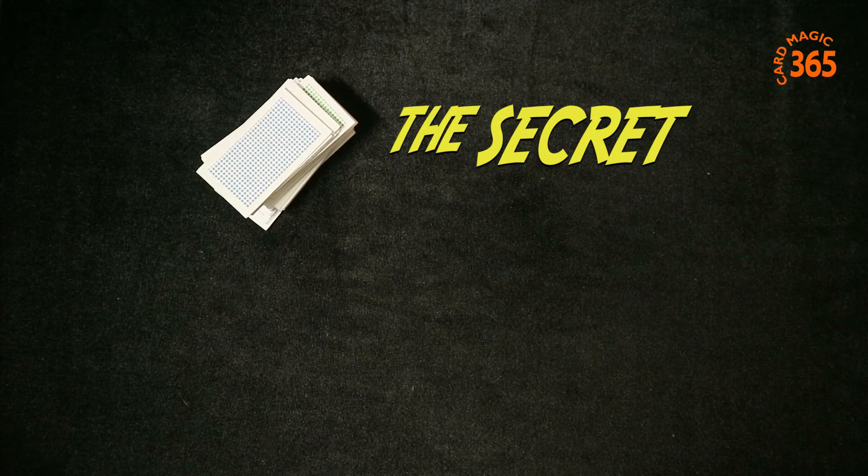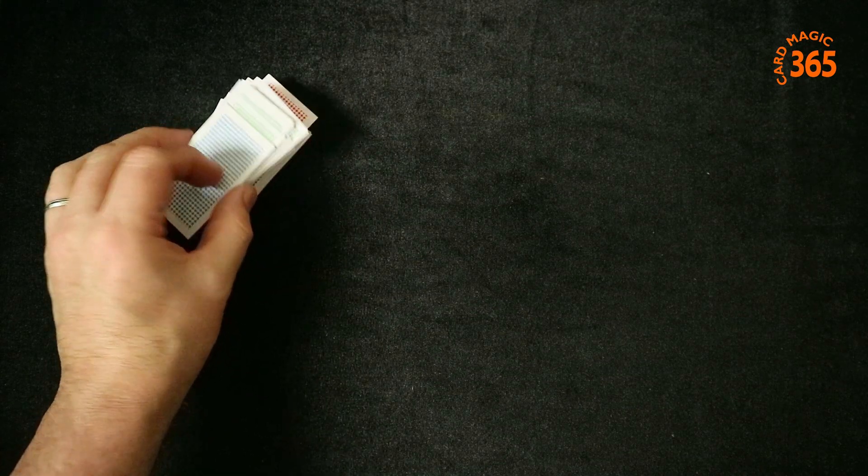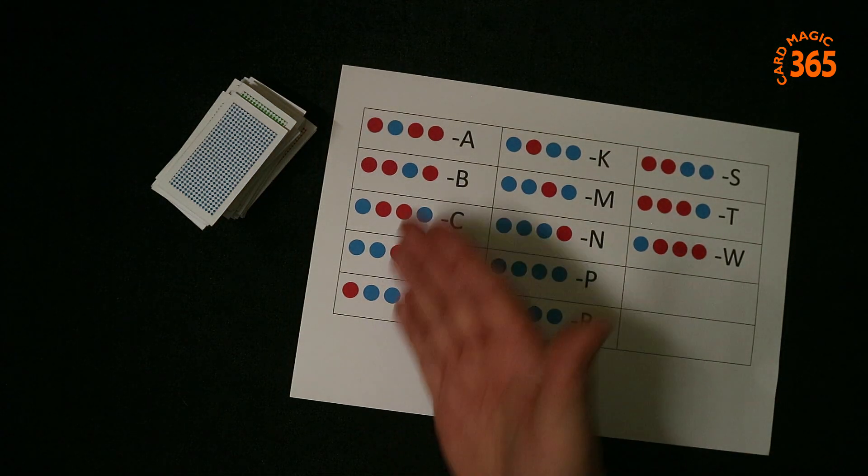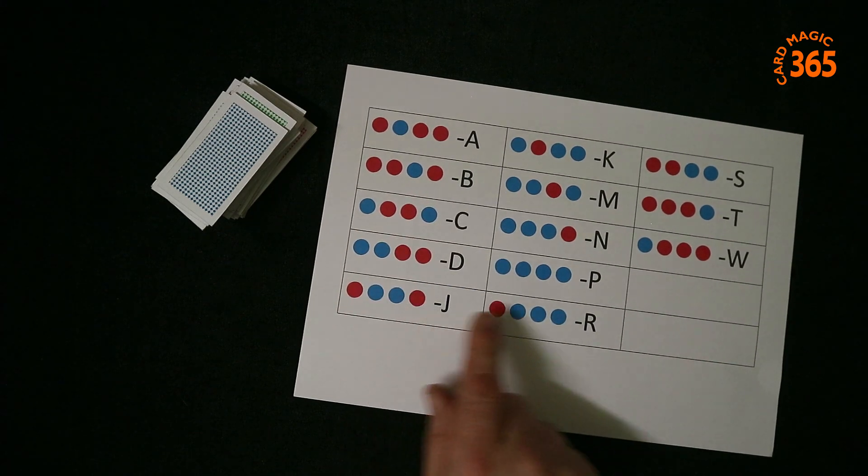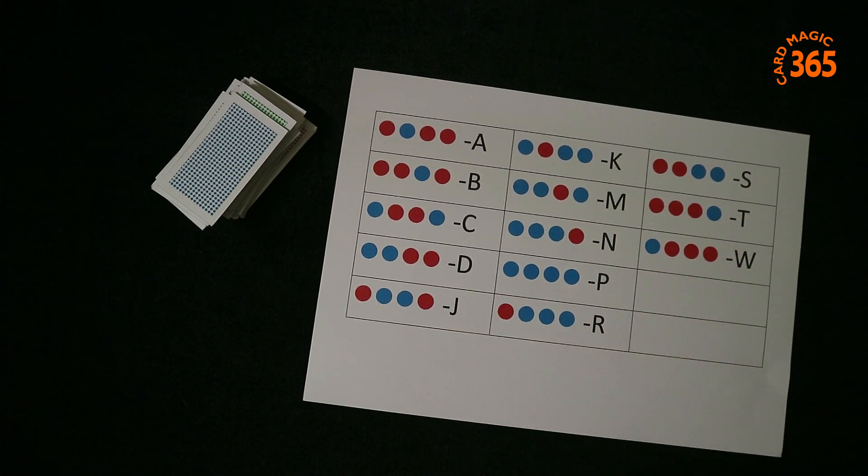Welcome to the revelation of this fantastic mind reading premonition type card effect. The cards are made up by yourself. Although these took me a while to make up, you need 13 cards repeated three or four times. So I've got 39 cards here. But the secret to this trick is a secret code. This. This is the whole secret to the trick. Using this color code, red and blues, reveals which card they took.